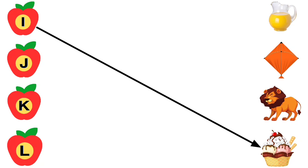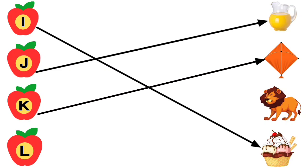I for Ice Cream, J for Jug, K for Kite, L for Lion.